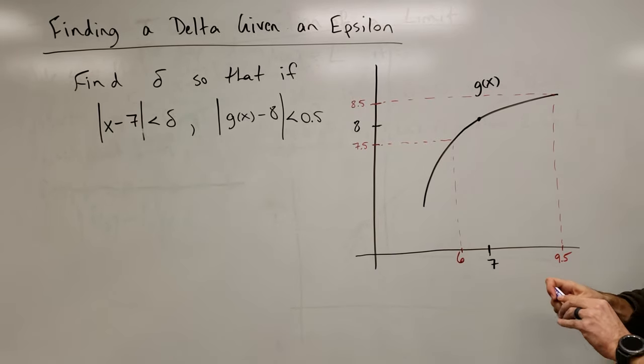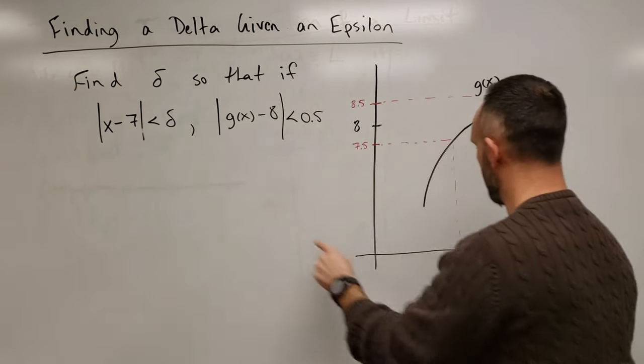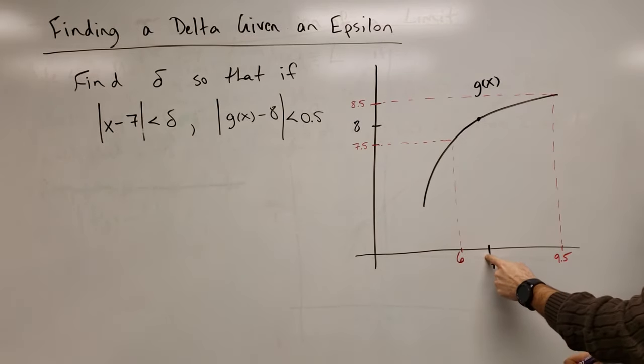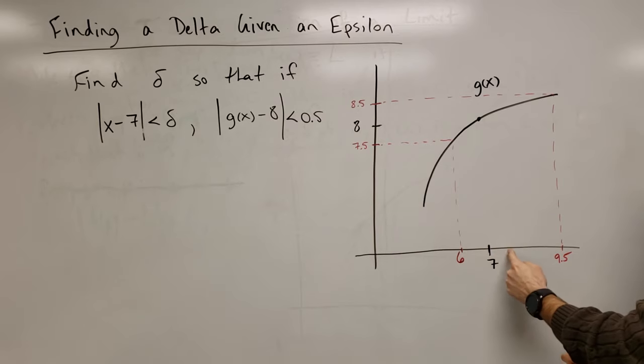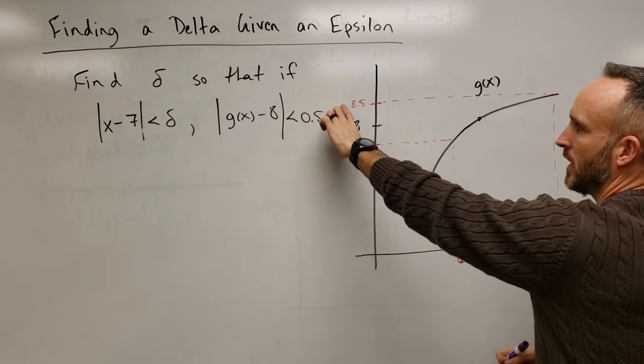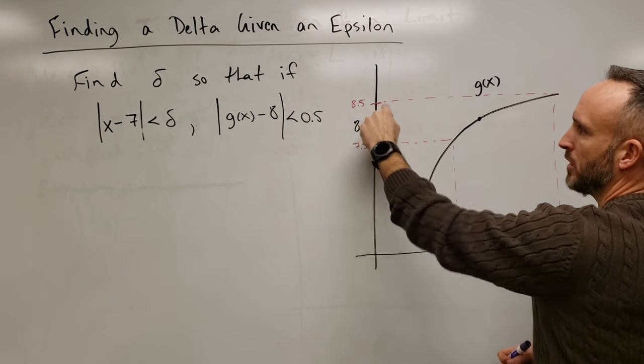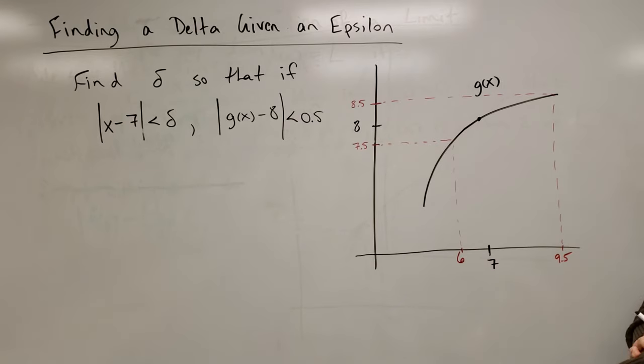We need to ensure that all x values that are delta away from 7, all x values that are delta away from 7, will have y values that are within 0.5 of 8. In other words, the y values have to live between 7.5 and 8.5.